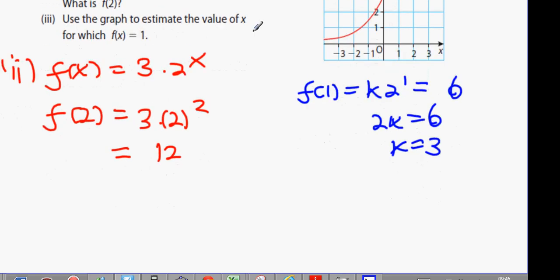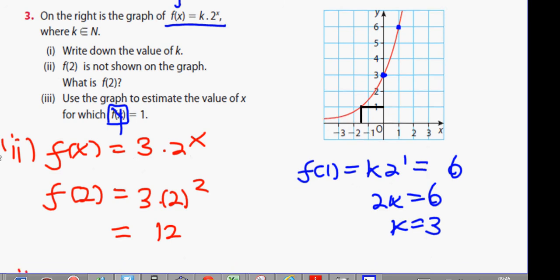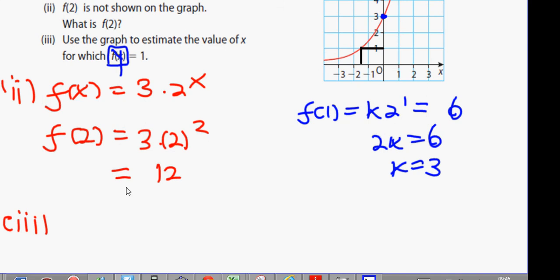Okay, guys. Use the graph to estimate the value of x for which f(x) equals 1. Where does f(x) equal 1? What does f(x) mean? What letter? Y. Y equals 1. So y, you go across, you hit the line, you go directly down. What do we think it is? Minus 1.6. About minus 1.6. Who got that one out? So more people got that one out, okay? That's very good.